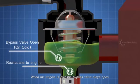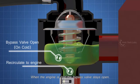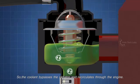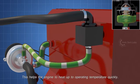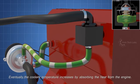When the engine is cold, the bypass valve stays open. So, the coolant bypasses the radiator and recirculates through the engine. This helps the engine to heat up to operating temperature quickly. Eventually, the coolant temperature increases by absorbing the heat from the engine.